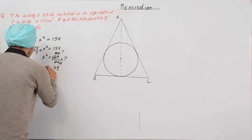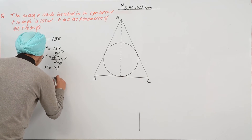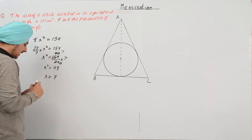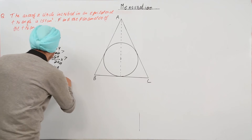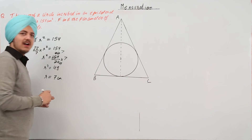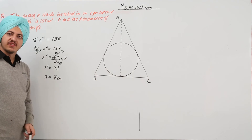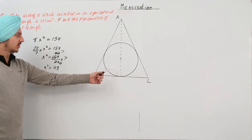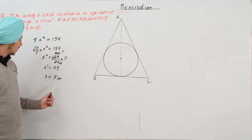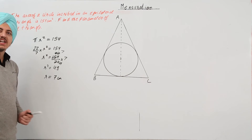From here we get r² = 49, that is 7 × 7, and r = √49 = 7 cm. So the radius of the inscribed circle is r = 7 cm.